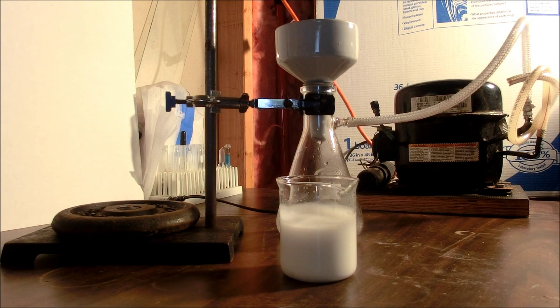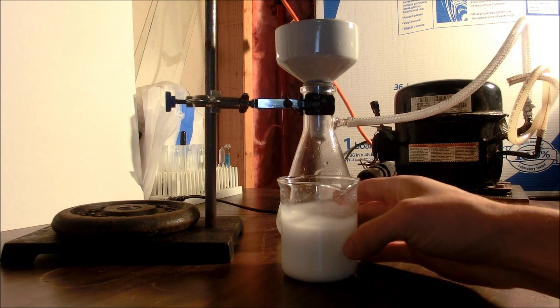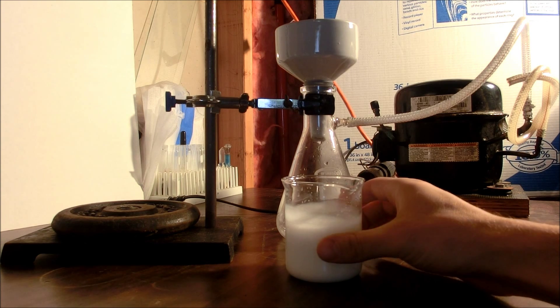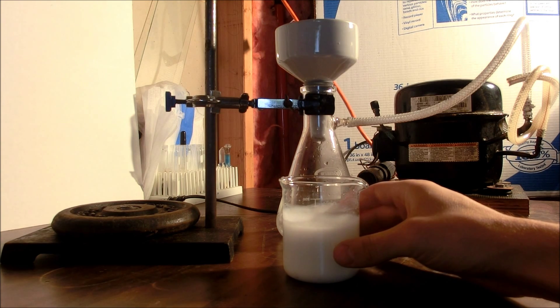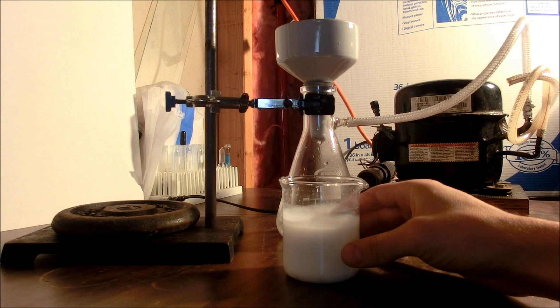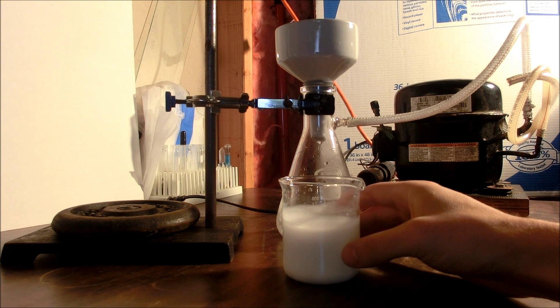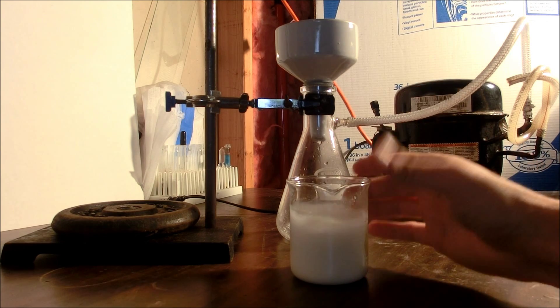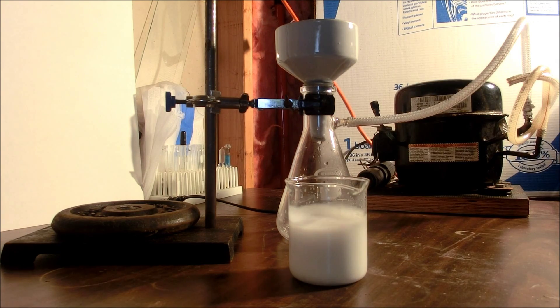After gas production has stopped, you can disassemble the apparatus and get ready for vacuum filtration. When you're filtering this, be very patient and slowly pour the solution onto the center of the filter paper. If you don't do this, it'll take you forever to filter this since this is such a fine suspension of zinc sulfide particles.